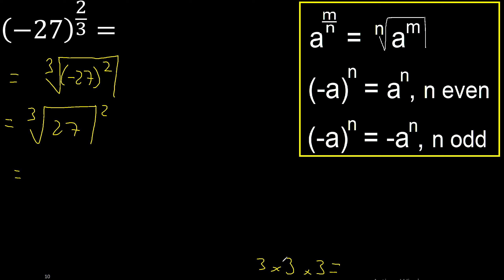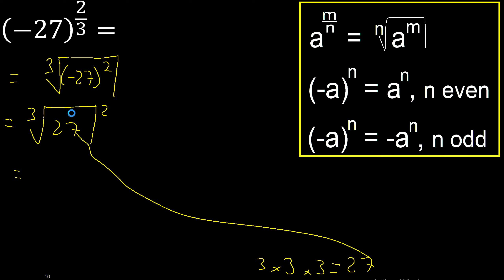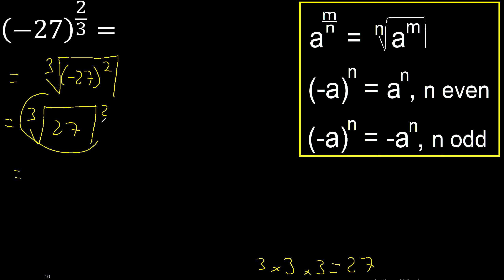Tree equal numbers: multiply by 3 is 9, multiply by 3 is 27. Therefore here is 3. Exponent, tree multiply 2 times.